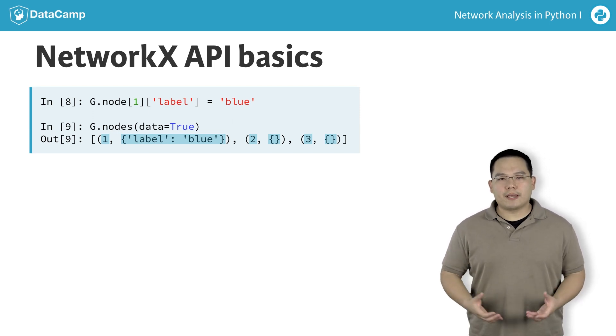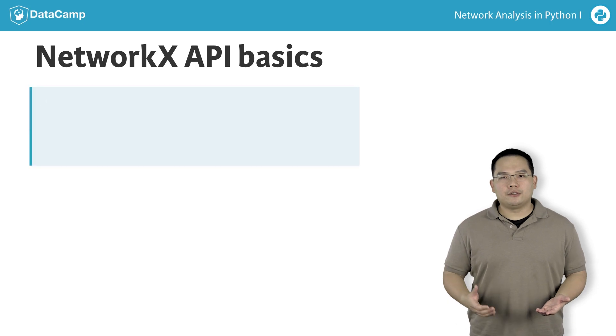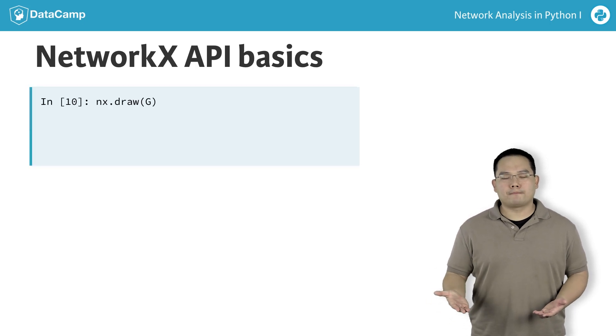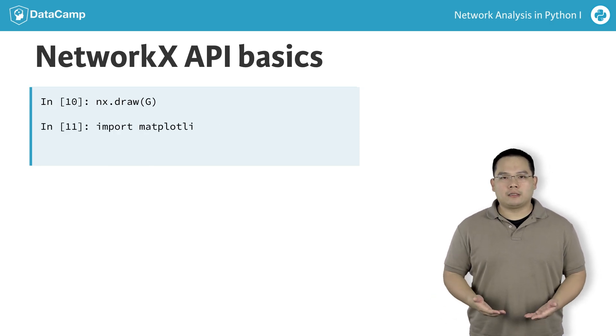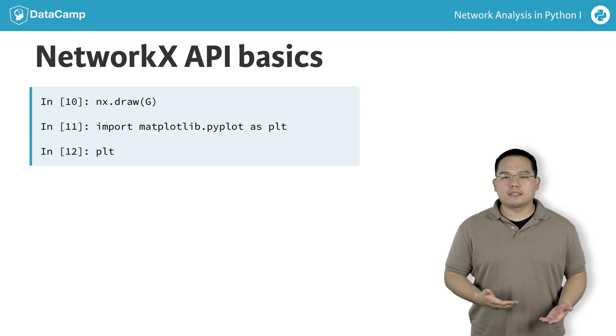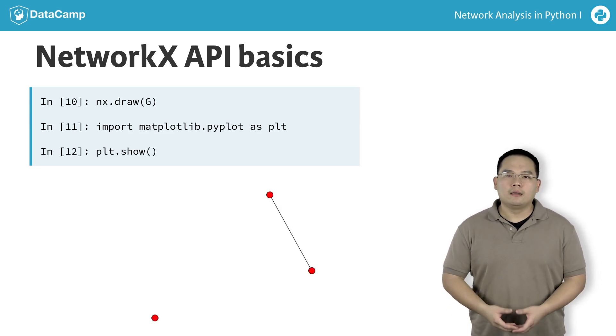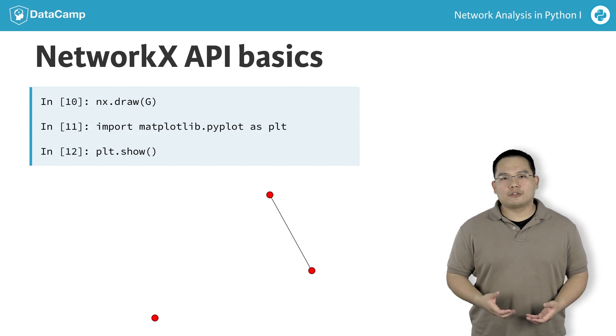NetworkX also provides basic drawing functionality using the nx.draw function. nx.draw takes in a graph G as an argument. In the IPython shell, you will also have to call the plt.show function in order to display the graph to screen. With this graph, the nx.draw function will draw to screen what we call a node linked diagram rendering of the graph.